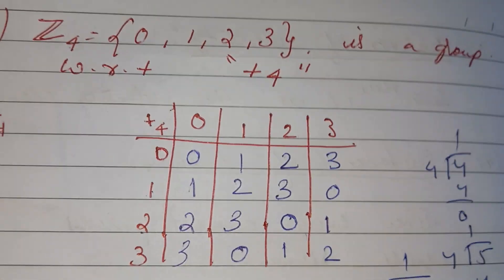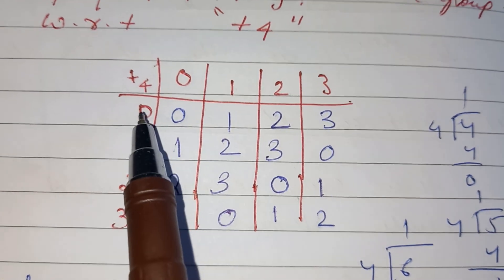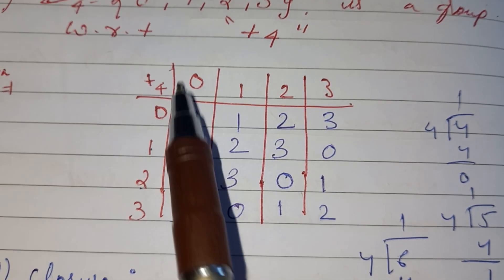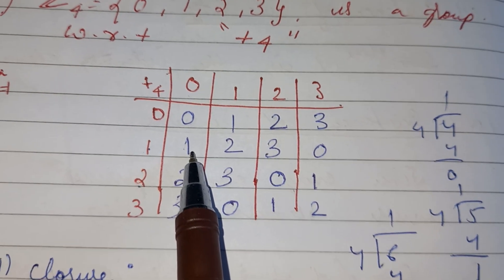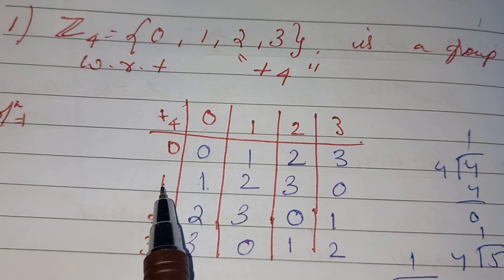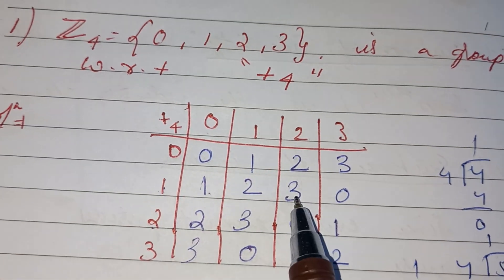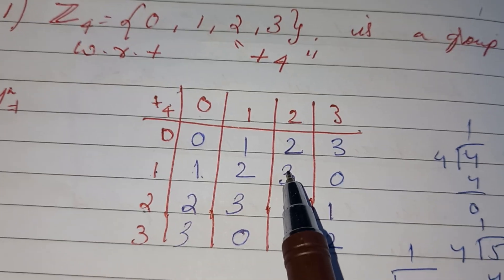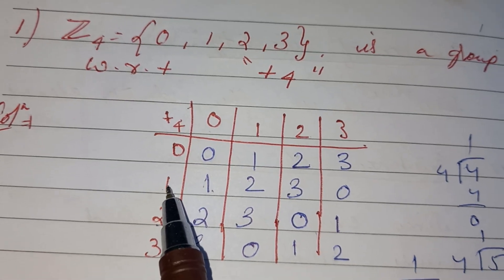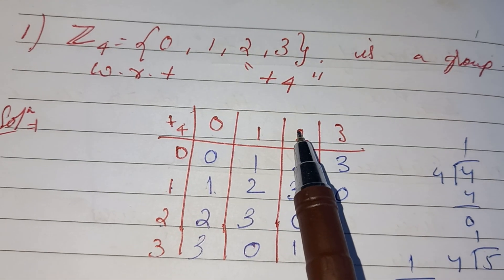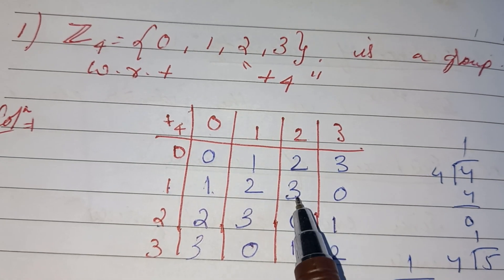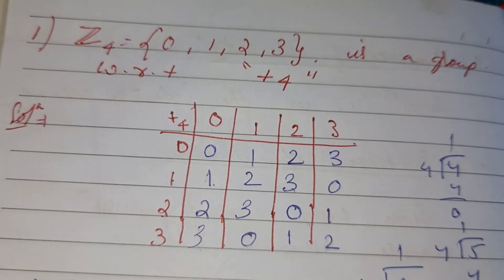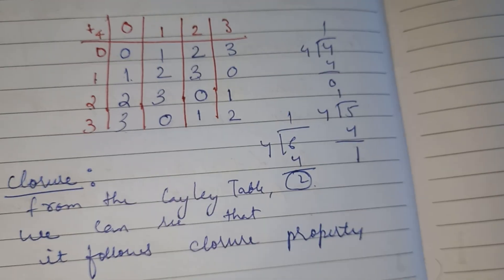We can see here: if we add 1 and 0 the result is 1, then 1 plus 2 is 3. It is the same as if we first add 1 and 2, which is 3, and then add 3 and 0, which is 3. So it follows the associativity property.